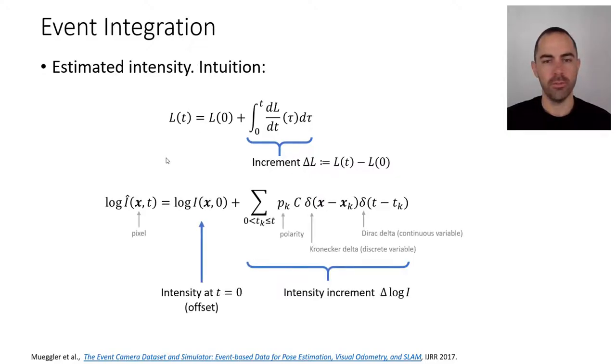Okay now if we write it in the quantities that we have for the DVS pixel, basically we have the log brightness estimated one, and because it cannot fully recover at a pixel x is basically the offset which was that orange dot from before. So the intensity at time equals zero.